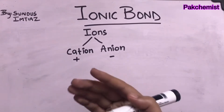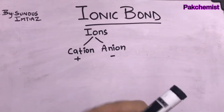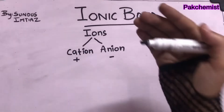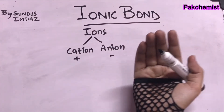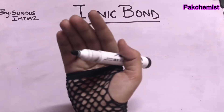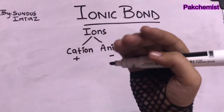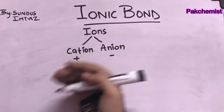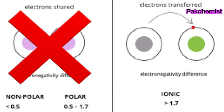Now let's start with an example. The ionic bond is between two ions — it can either be positive or negative. They are not sharing electrons; they are giving electrons to the other atom to fill its outermost shell. Let's discuss an example of NaCl.